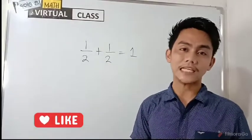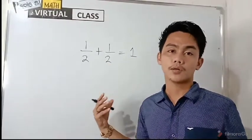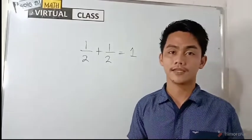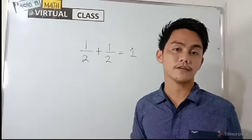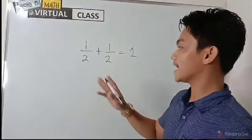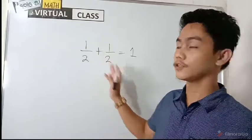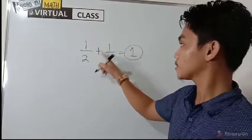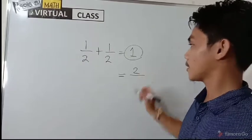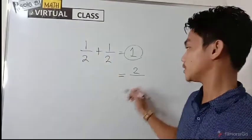If we consider the typical way of addition, adding the numerator to numerator and denominator to denominator, it will result this way. One plus one is equal to two, and two plus two is equal to four.